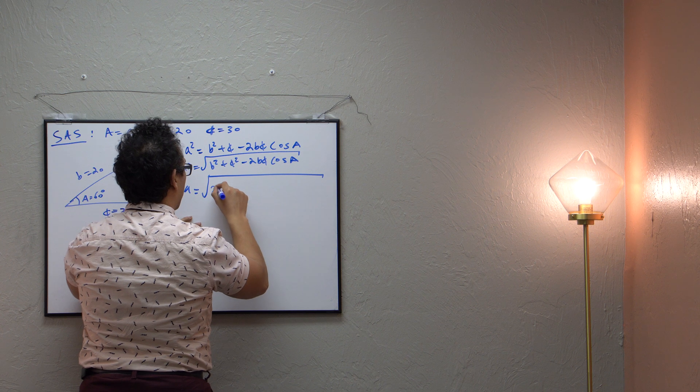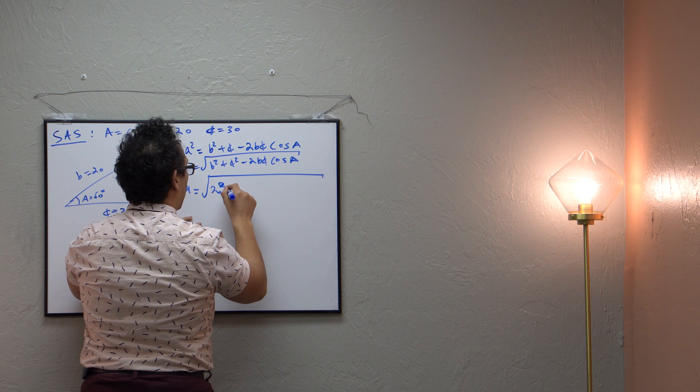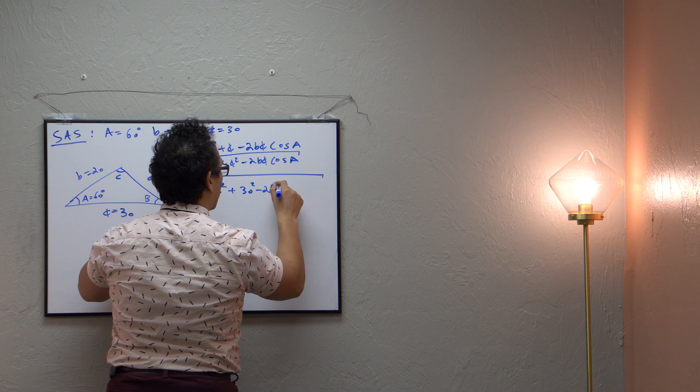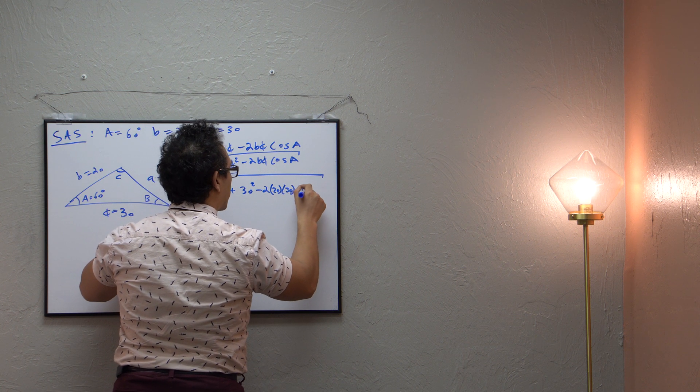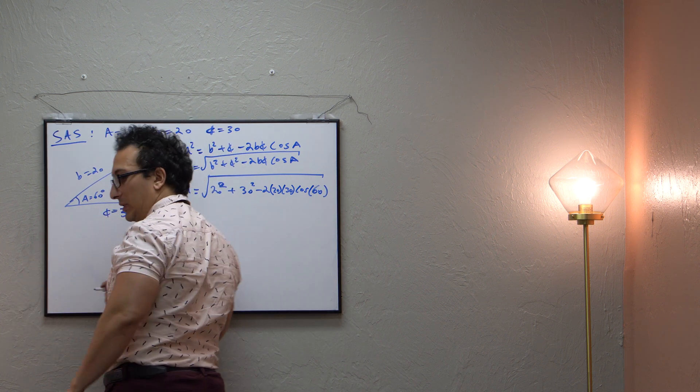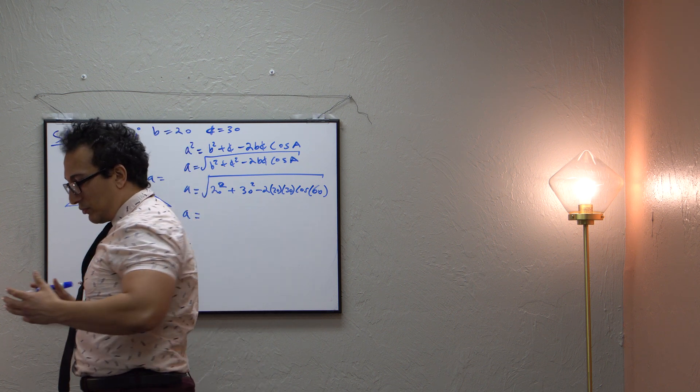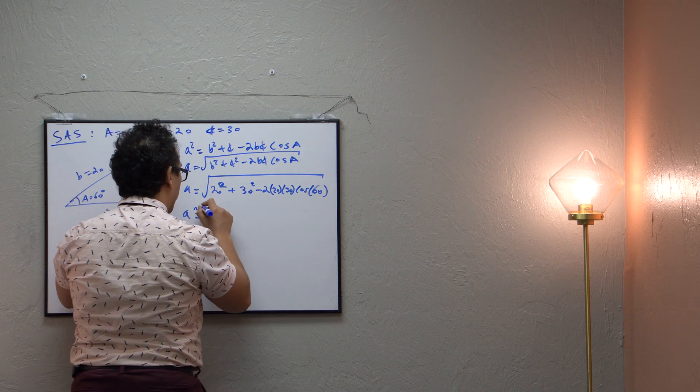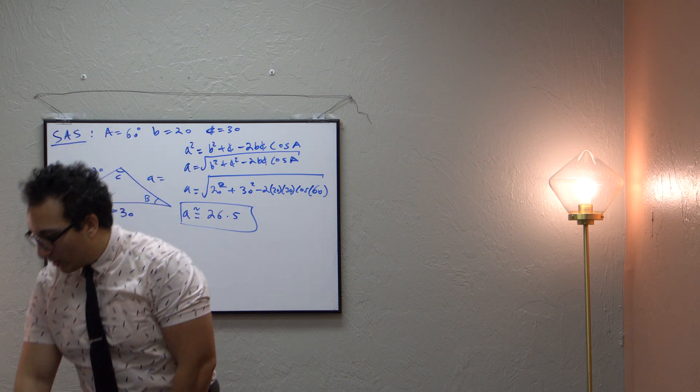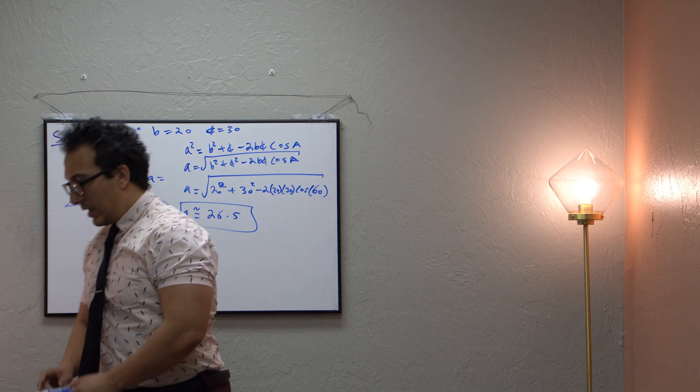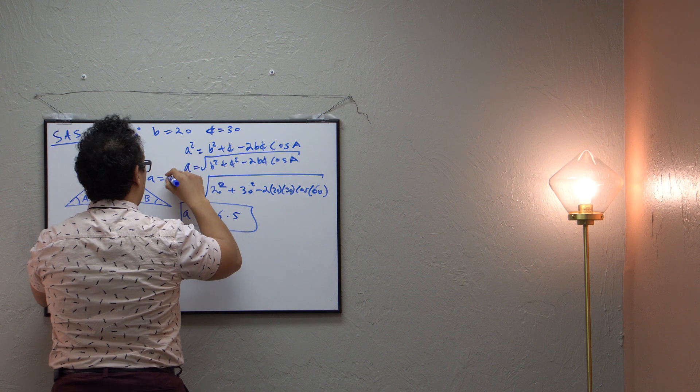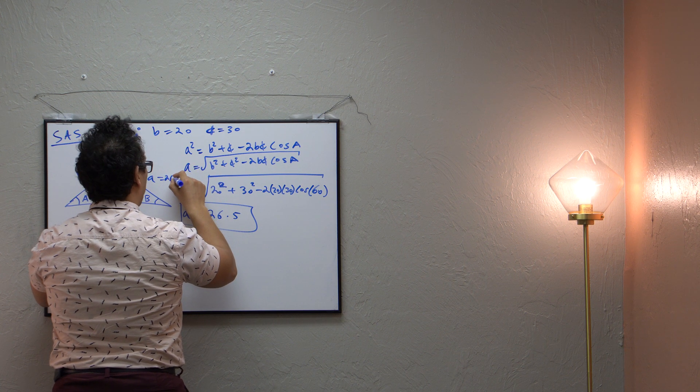B squared is 20 squared plus c squared is 30 squared minus 2 times 20 times 30 times the cosine of 60 degrees. And when we compute that, when we plug that into our calculator, we get approximately 26.5. So we have solved for little a.